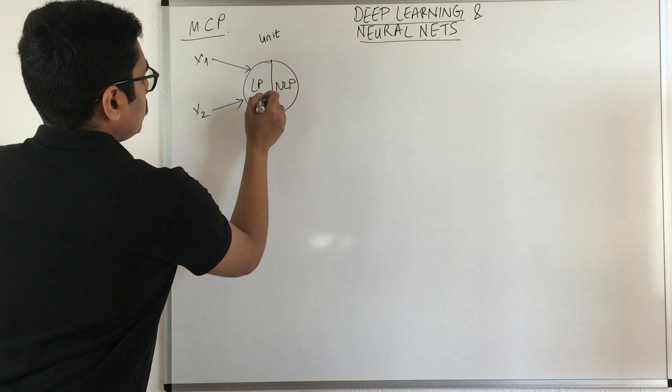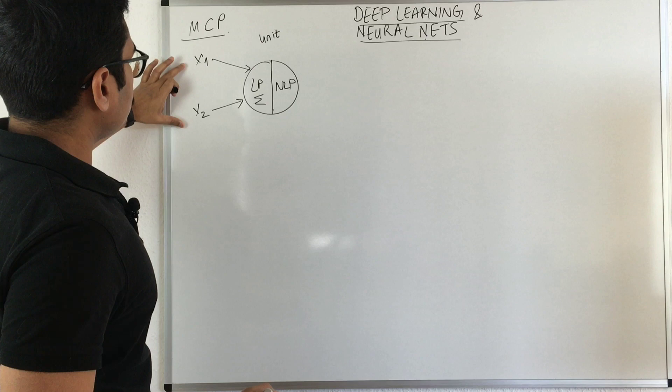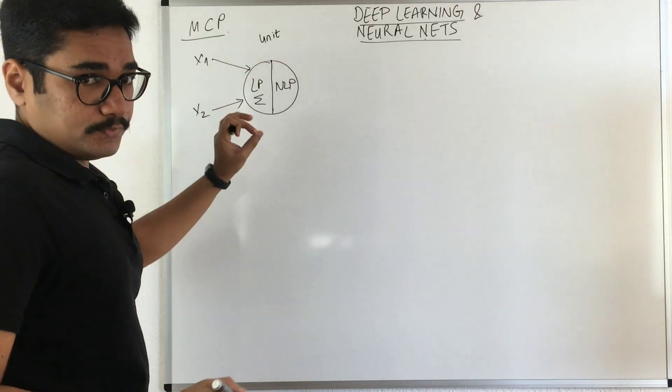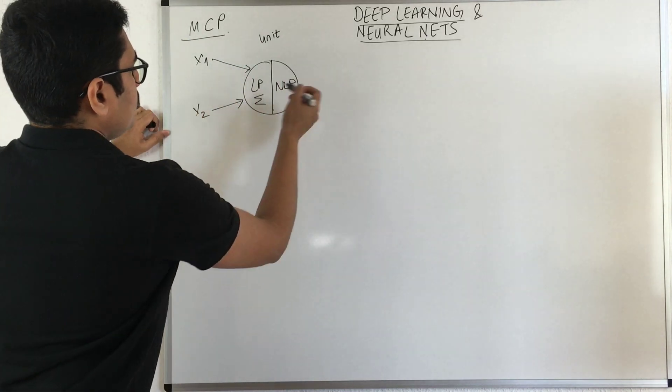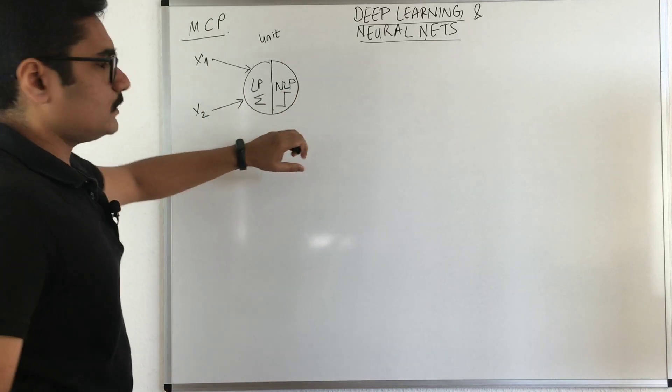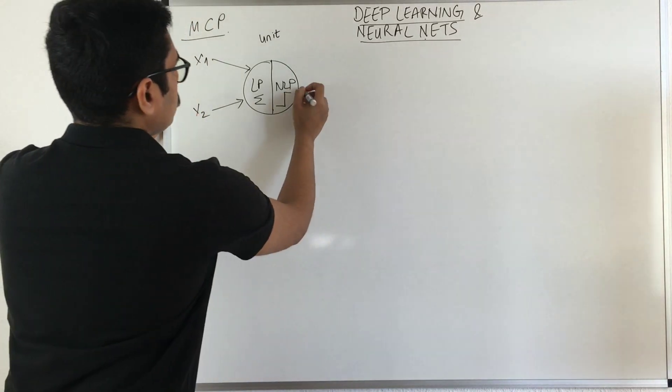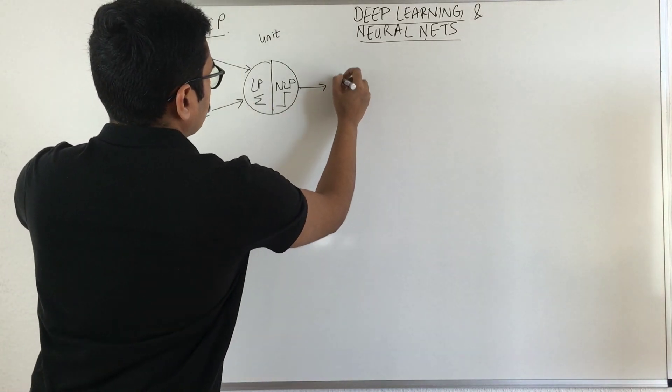This linear part is essentially a summation where you have all these inputs multiplied with some coefficients, and then you have a step function. For the time being, we'll just consider the step function, and what we have is an output, say Y cap.